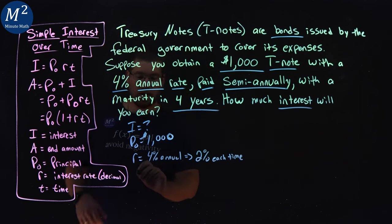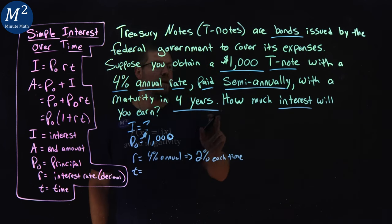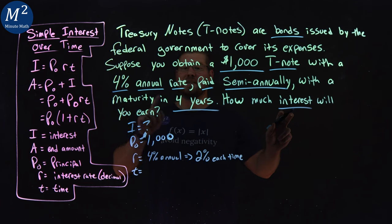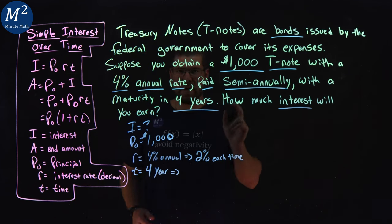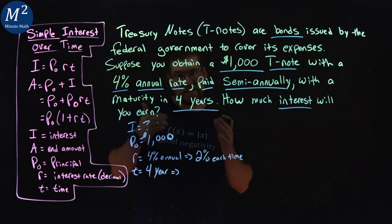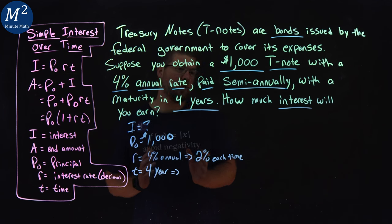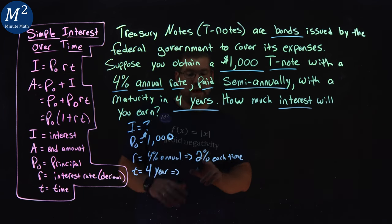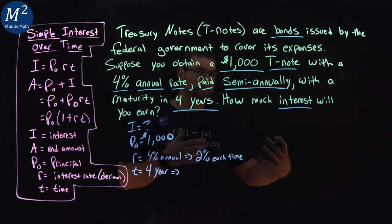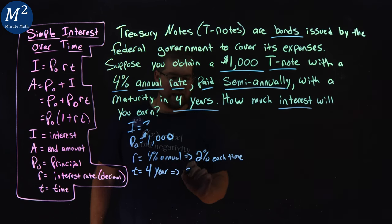Then lastly, our time. They tell us it's a 4-year maturity, but since it's paid semi-annually again, that's going to be a total of 8 payments. So our time grouping is how many groups of payments happen. It's 2% for each half year, so it's going to be 8 half years.